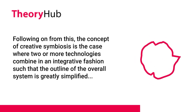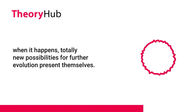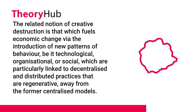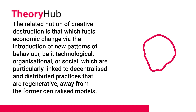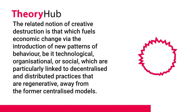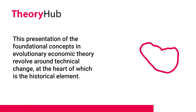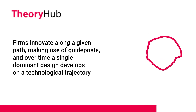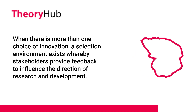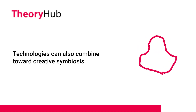The concept of creative symbiosis is the case where two or more technologies combine in an integrative fashion such that the outline of the overall system is greatly simplified; when it happens, totally new possibilities for further evolution present themselves. The related notion of creative destruction is that which fuels economic change via the introduction of new patterns of behavior — be it technological, organizational, or social — which are particularly linked to decentralized and distributed practices that are regenerative, away from the former centralized models. Foundational concepts in evolutionary economic theory revolve around technical change, at the heart of which is the historical element. Firms innovate along a given path, making use of guideposts, and over time a single dominant design develops on a technological trajectory. When there is more than one choice of innovation, a selection environment exists whereby stakeholders provide feedback to influence the direction of research and development. Technologies can also combine toward creative symbiosis.